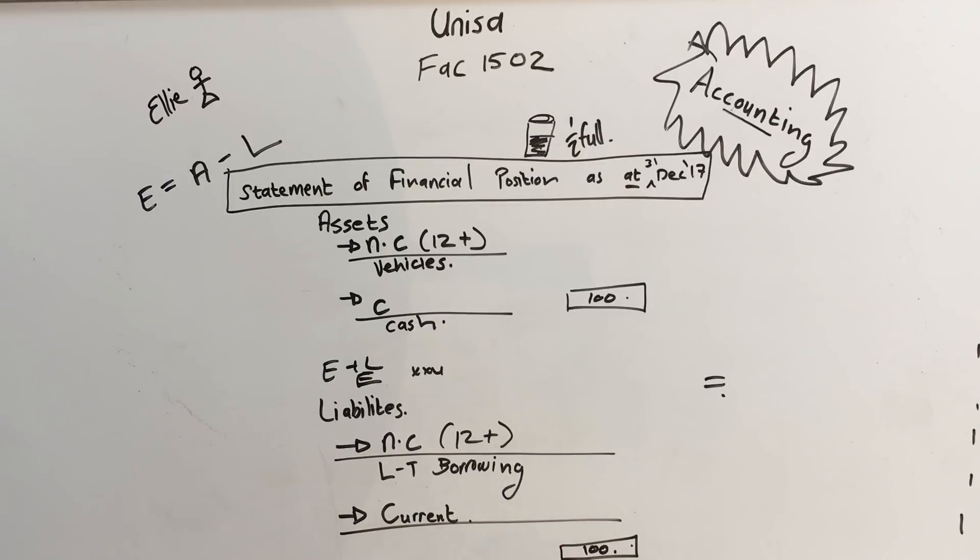And that stuff we are using to run our business is called trade and other payables. And it used to be called inventory if you're familiar with that word but it's trade and other payables. We have to pay it because it's a liability.